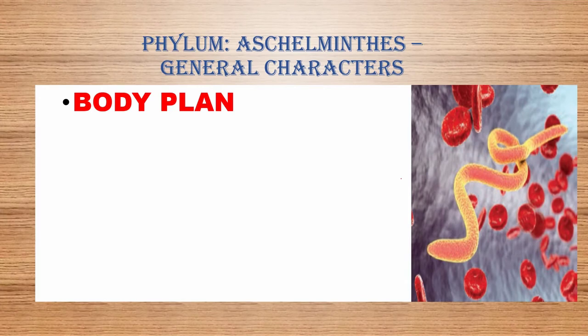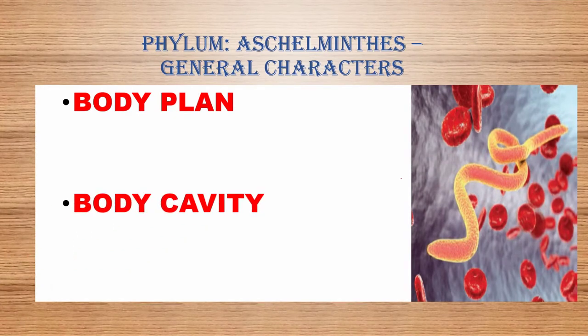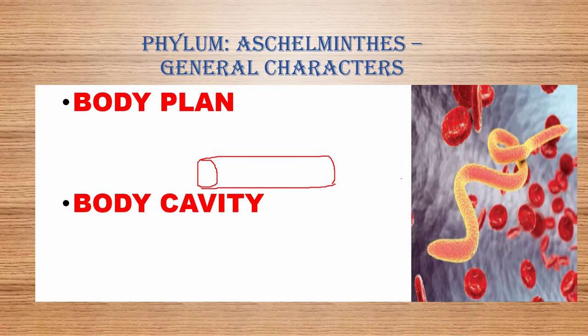The body plan of Aschelminthes is termed the tube-within-tube type. The outer body wall is like a large tube-shaped structure — in cross-section it looks round, like a tube. Inside, the alimentary canal is also a tube — a small tube within the large tube. The large tube is the body wall, giving the tube-within-tube body plan.